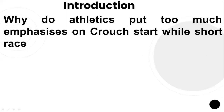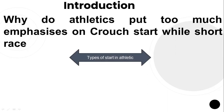Why do athletes put too much emphasis on crouch start while short races? In previous classes we were talking about the various kinds of races — short races meaning sprints, medium races, and long distance races. Today we will talk with more emphasis on the part of the short race start, that is the crouch start. This kind of start is never taken in medium races or long distance races. It has its indispensable role in short races or sprint races.